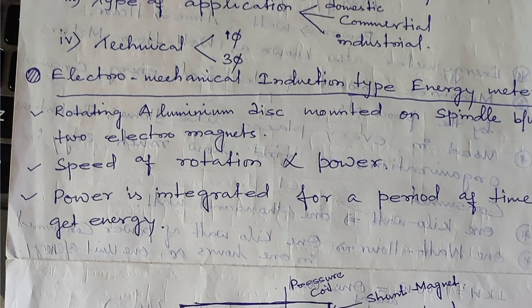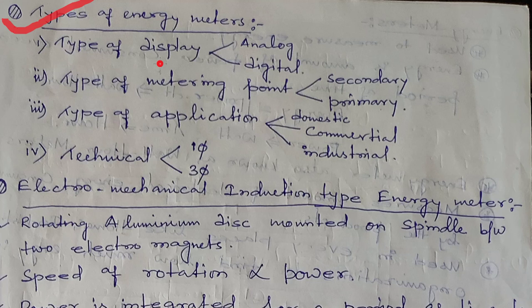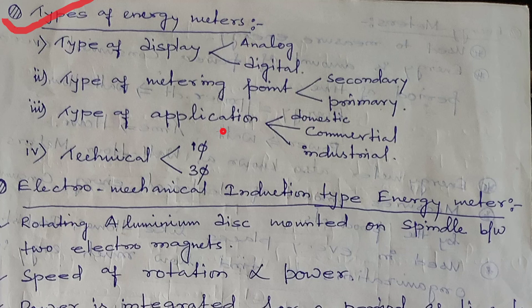Types of energy meter: energy meters are of four types. Based on display, we can divide into analog energy meter and digital energy meter. Number two, type of metering point: primary and secondary. Third, type of application: domestic, commercial, industrial. Technically, energy meter ko do type mein divide kiya jata hai: ek single phase energy meter and ek three phase energy meter.